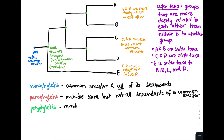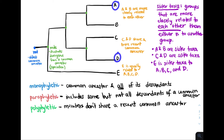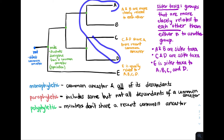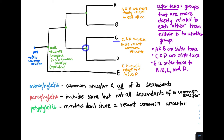Finally, polyphyletic groups are when members that don't share a recent common ancestor are grouped together. For example, A and D — A's most recent common ancestor is at one node, and D's most recent common ancestor is at a different node. If we group A and D together, that would be a polyphyletic group because they don't share a recent common ancestor. Similarly, B and C are polyphyletic because B shares a recent common ancestor with A, and C shares a recent common ancestor with D, but B and C don't share a recent common ancestor with each other.